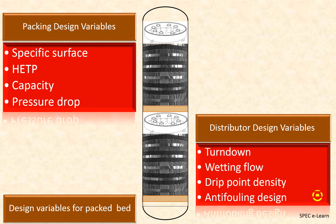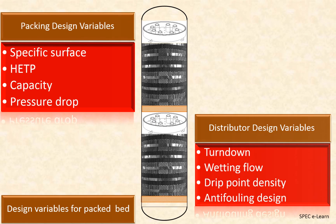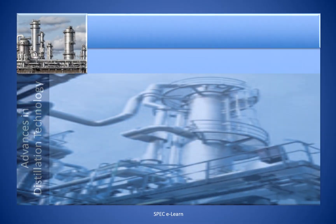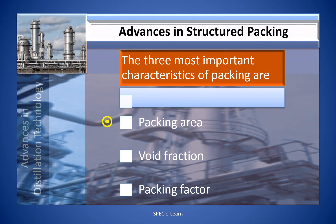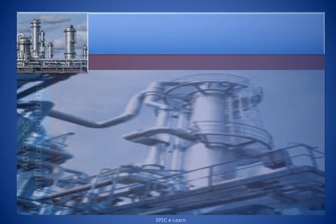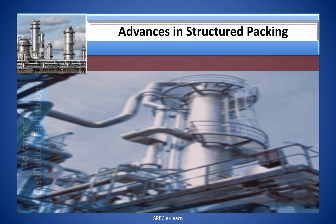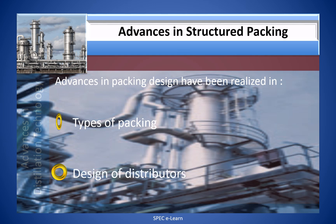The three most important characteristics of packing are packing area, void fraction, and packing factor. Driven by the need for improved performance in terms of capacity and efficiency, advances in packing designs have been realized — in types of packing and in design of distributors. We will discuss them one by one now.